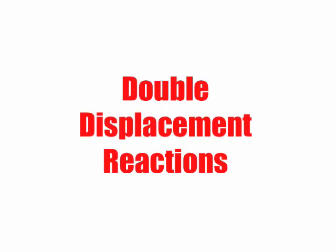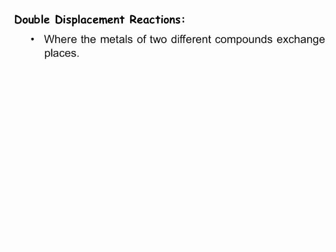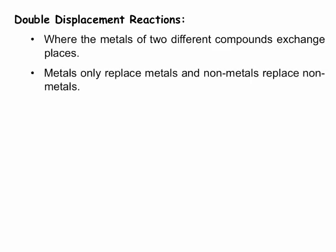Double displacement reactions — we've looked at single displacement reactions, and these are double displacement reactions, which are very easy to identify. Here is where the metals of two different compounds exchange places, so the metal combines with another metal. Everything is paired up — it's kind of like a double date. Metals only replace metals, non-metals replace non-metals.